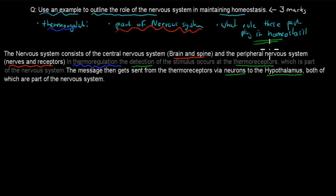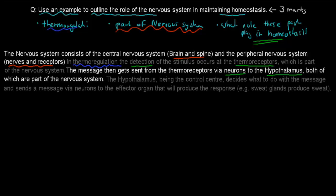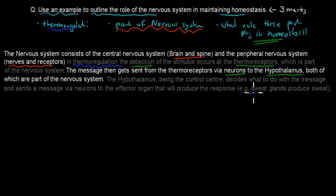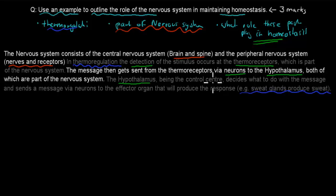The green here represents what role the nervous system parts play in homeostasis — they help with detection. The hypothalamus, being the control center, decides what to do with the message and sends a signal via neurons to the effector organs that will produce the response. For example, sweat glands produce sweat. I've said that neurons are part of the nervous system, and all of this helps produce the response in thermoregulation.